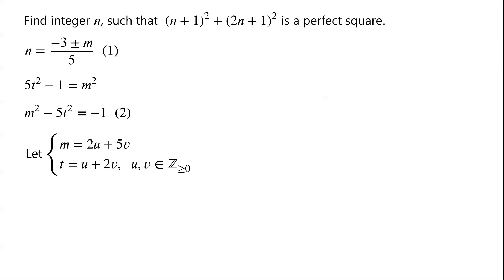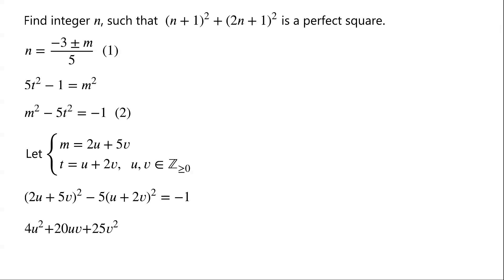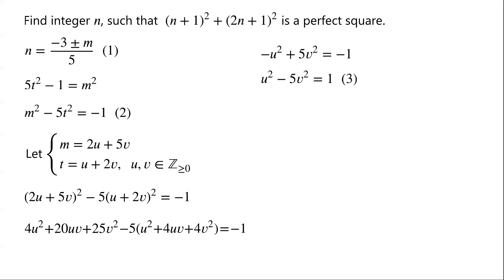Substituting m and t into equation 2, we have (2u + 5v)² − 5(u + 2v)² = −1. Expanding: (2u+5v)² = 4u² + 20uv + 25v², and (u+2v)² = u² + 4uv + 4v². The 20uv terms cancel, giving −u² + 5v² = −1. Multiplying by −1, we get u² − 5v² = 1. This is a Pell's equation.